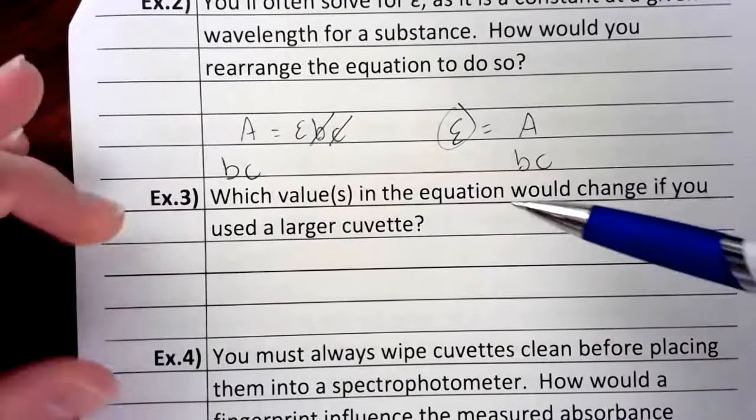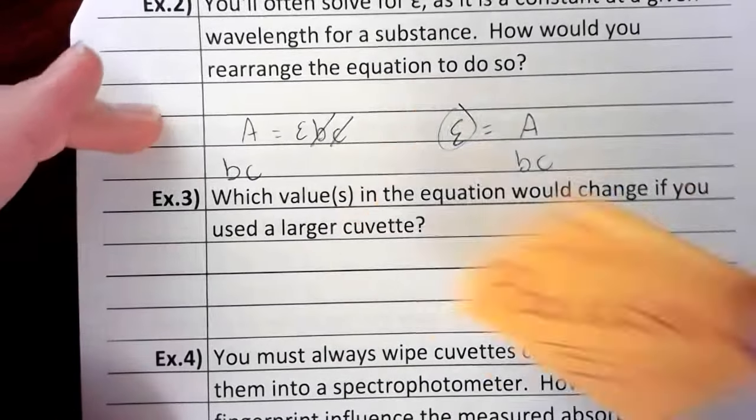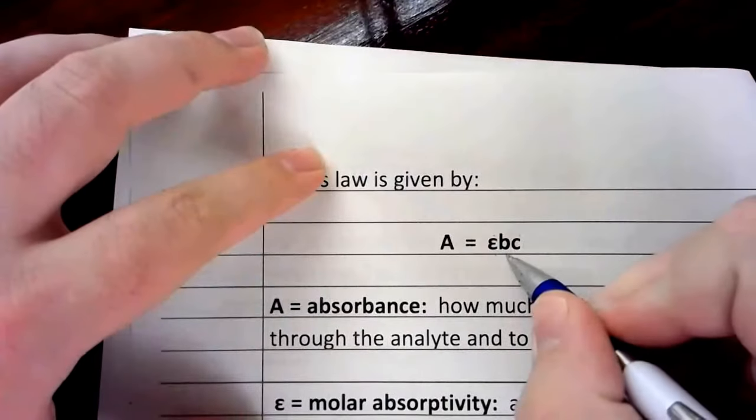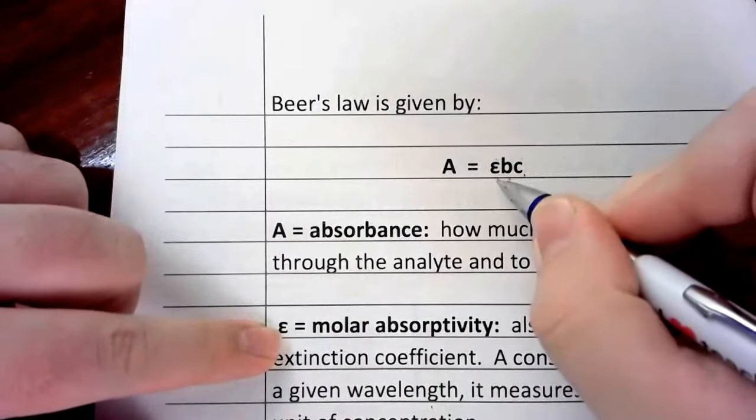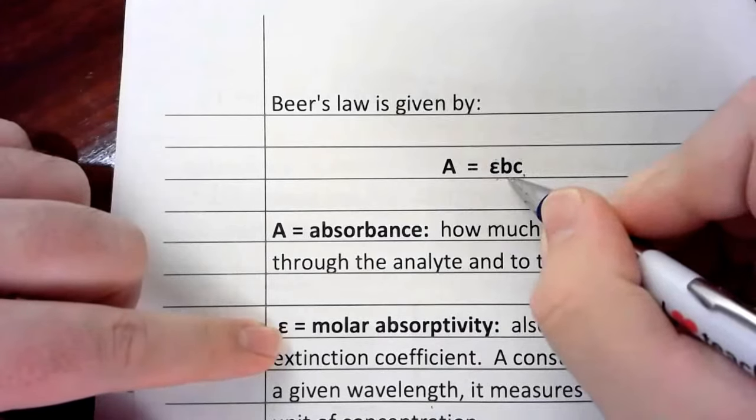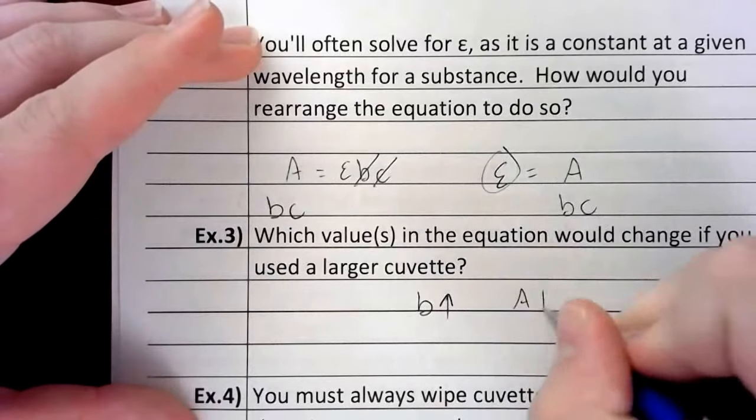So, which value or values in the equation would change if you used a larger cuvette? Well, the very first thing that would change if I used a larger cuvette would be the path length. A bigger cuvette would mean that light would have to travel through a greater distance. So if I used a larger cuvette, that would affect the path length, but it wouldn't affect the concentration. And we said that molar absorptivity only depends on the substance and the wavelength. So this wouldn't change either. So if b changes, something else has to, the absorbance.